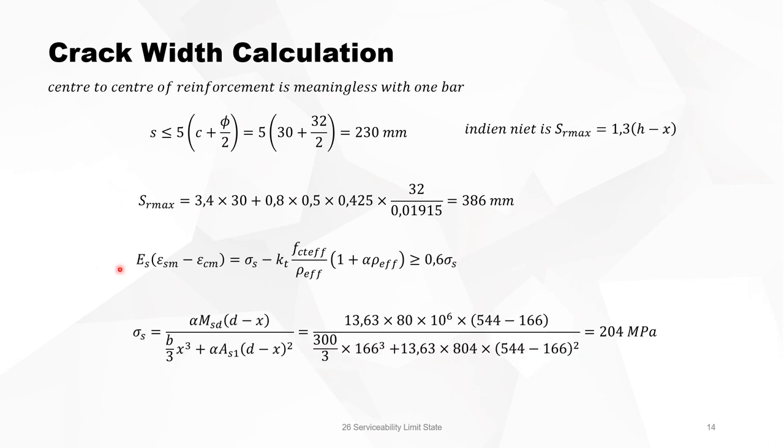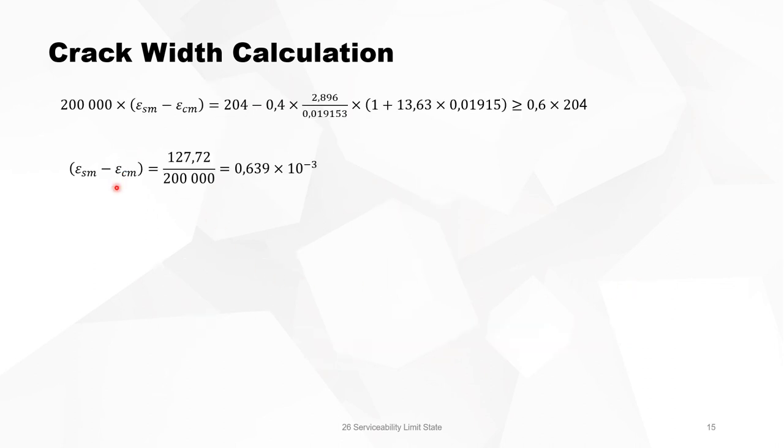Then we calculate again the delta epsilon. But first to do that, we need the sigma S. Sigma S is now 204 megapascal instead of 200, so that's also not that big a difference. The delta epsilon is 0.639 times 10 to the power minus 3. Now we can calculate the crack width, which is the multiplication of the two, and it gives us 0.25 millimeters. You see now that the crack width or the choice of the diameter of the tension reinforcement has a big influence on the total crack width.